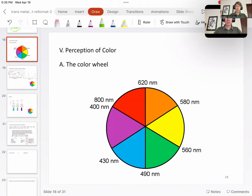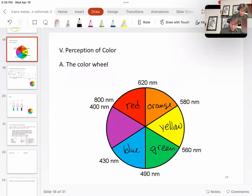This is the color wheel that we're going to use. And the way that this works is we're going to call this red, orange, yellow, green, blue, and violet.